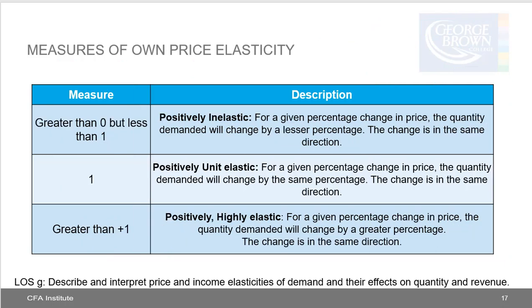If own price elasticity is greater than 0 but less than 1, it's positively inelastic — for a given percentage change in price, quantity demanded changes by a lesser percentage in the same direction. If own price elasticity equals positive 1, it's positively unit elastic — quantity demanded changes by the same percentage in the same direction. If own price elasticity is greater than positive 1, it's positively highly elastic — quantity demanded changes by a greater percentage in the same direction.